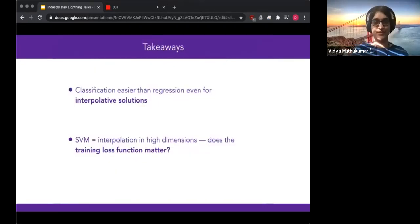So the main takeaways are, as we just saw, classification can be dramatically easier than regression in even an asymptotic sense for these interpolative solutions. And a key technical component here was that we also showed that the SVM and interpolation are exactly the same in high dimensions, suggesting that training loss functions may not make much of a difference.